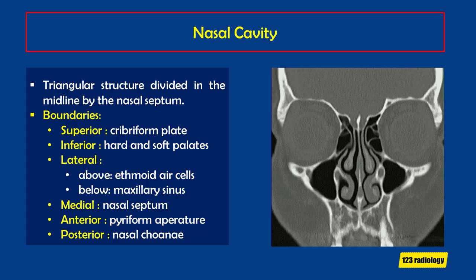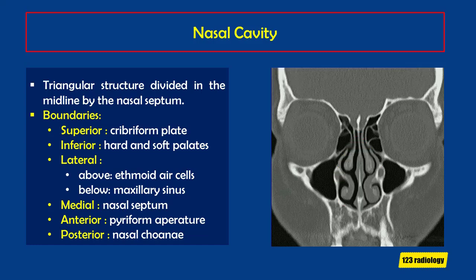The nasal cavity is a triangular shaped structure divided in the midline by the nasal septum. It is bounded superiorly by the cribriform plate of ethmoid as its roof, separating it from the anterior cranial fossa, and extends inferiorly to the level of the hard and soft palate, separating it from the oral cavity.